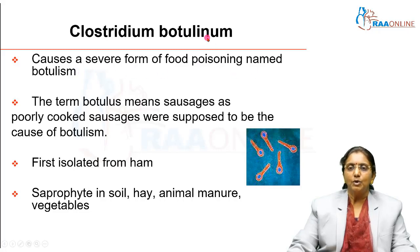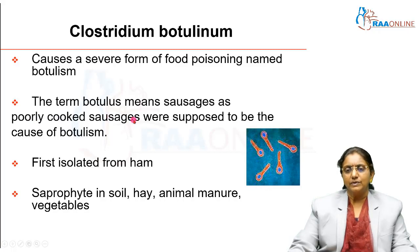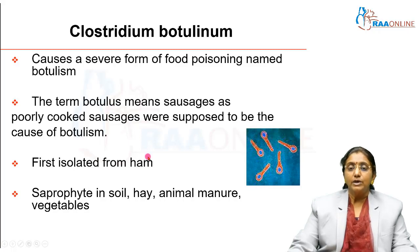The name of the organism is botulinum and the disease caused is botulism. The name botulism comes from the term 'botulus,' which means sausages, because they first diagnosed that botulism developed after consuming poorly cooked sausages. That is how the name stuck, derived from the word botulus meaning sausage. This organism was first isolated from ham.